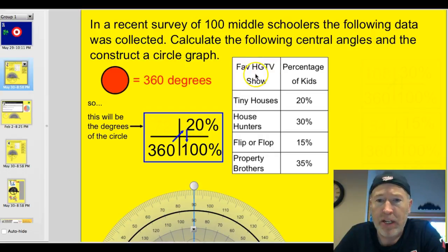So we've got this little survey they did on finding the fave HGTV show. Looks like tiny house hunters was 20% of the kids chose that, house hunters was 30%, flip or flop 15%, property brothers 35%. So we need to display this, and in order to do that we have to determine the central angle. The problem is a circle has 360 degrees and we have percentages. It would be great if the circle had 100 degrees because we could just say, hey, it's 20% of the circle. But no, what we have to do is determine the central angle. The way I do it is the box. You knew I was going to go there. I like the box. It's very helpful.